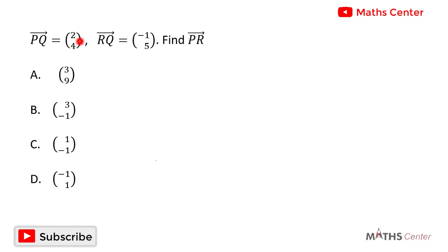Vector PQ is equal to (2,4). Vector RQ is equal to (-1,5). Find vector PR.